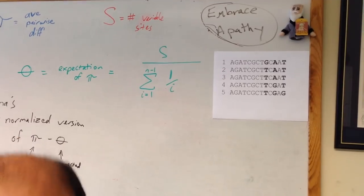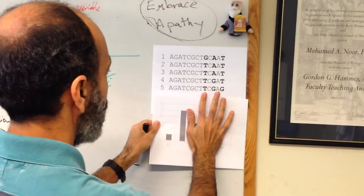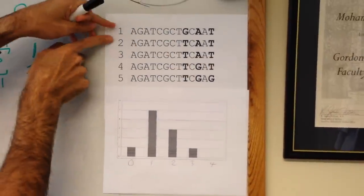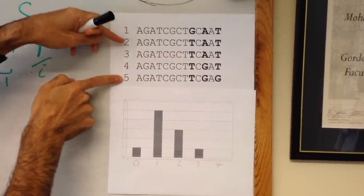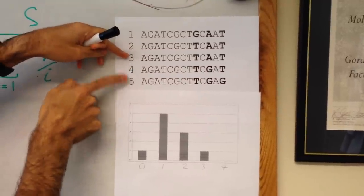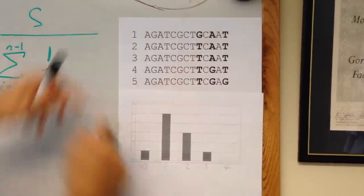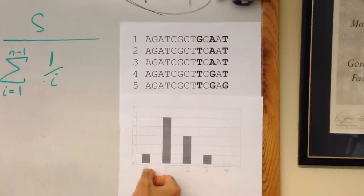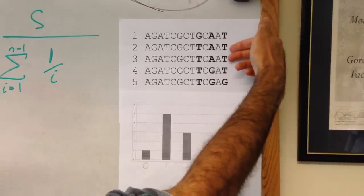We have a distribution of pairwise differences. Looking across this population, if you were to compare 1 to 2, 1 to 3, 1 to 4, 1 to 5, 2 to 3, 2 to 4, 2 to 5, 3 to 4, 3 to 5, and 4 to 5, you'd have this distribution. The only ones that are identical here, the only ones with zero differences, are individuals 2 and 3.